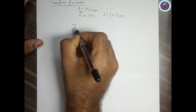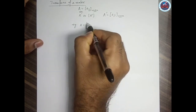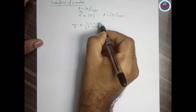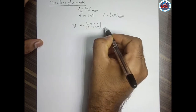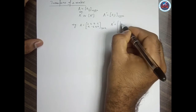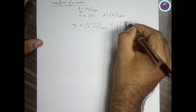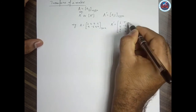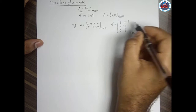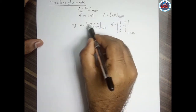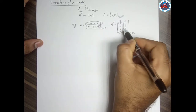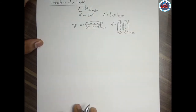For example, let A equal to [1, 2, 3, 4; -5, -6, 3, 9]. This is a matrix of order 2 by 4. So A transpose will be [1, -5; 2, -6; 3, 3; 4, 9], which is now a matrix of order 4 by 2. The rows have been changed to columns — this is how we get the transpose of a matrix.